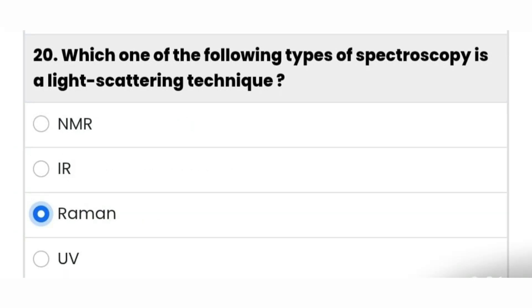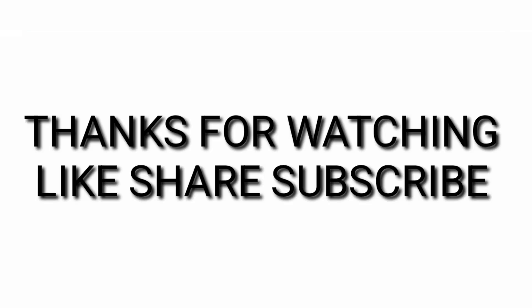The last question: which of the following types of spectroscopy is a light scattering technique? Raman is the right answer. Thanks for watching — like, share and subscribe.